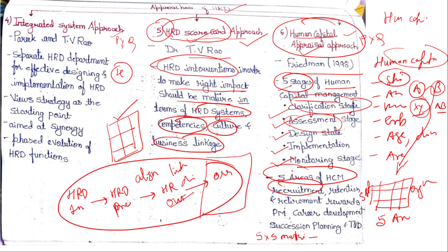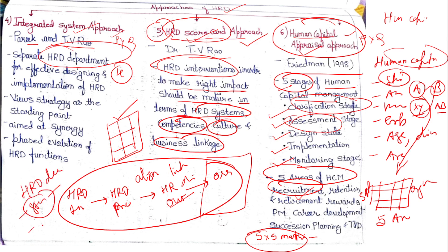The last approach is the integrated system approach by Parikh and T.V. Ra. First and foremost, they said an organization should have a separate HRD department, and this HRD department should be a combination of whatever approaches were studied till now. According to them, an HRD department should be strategic in nature — that is Ulrich and Dave's approach — and start with strategic alignment. It should focus on an integrated approach with all departments working together. It should use the HRD scorecard and HRD culture, focus on human capital management, and of course use PCMM. They integratively said that the HRD department should use everything — thus giving an integrated system approach covering every system and every pathway.